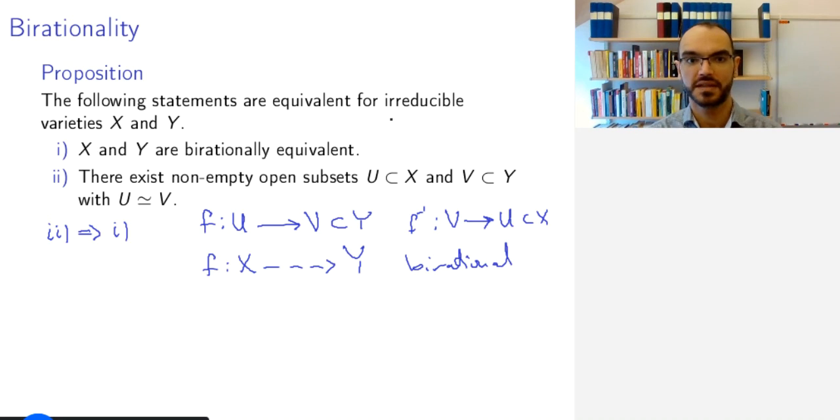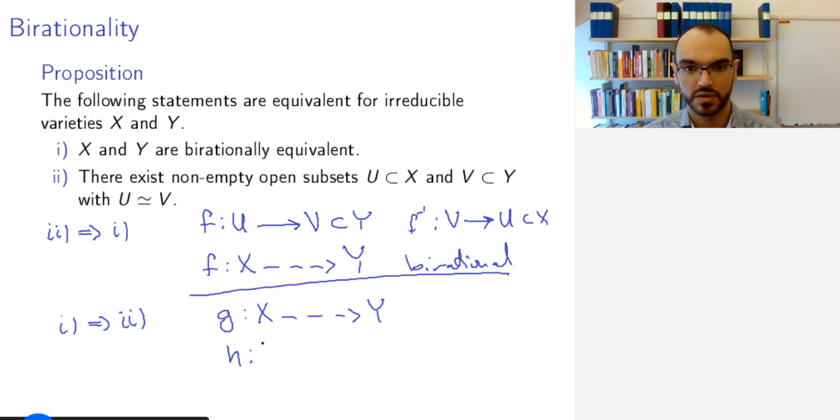We're working with irreducible varieties, so therefore non-empty, open subsets are dense. And for 1 implies 2, now we have g from X rational map to Y and h from Y to X so that they compose with the identity.